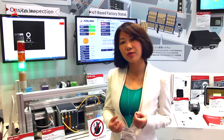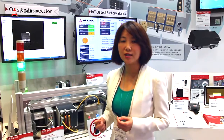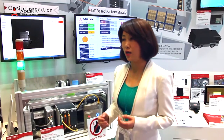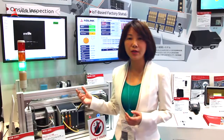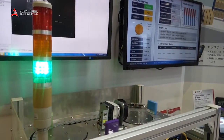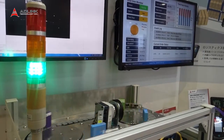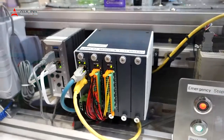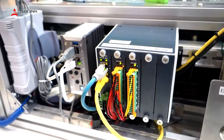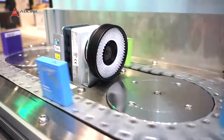Today I'm going to introduce how to enable a smart factory based on Adeline products. You can see behind me here is a conveyor belt — we will use that to simulate the production line. To control the conveyor we use Adeline products, including EtherCAT, to control the motion and I/O.